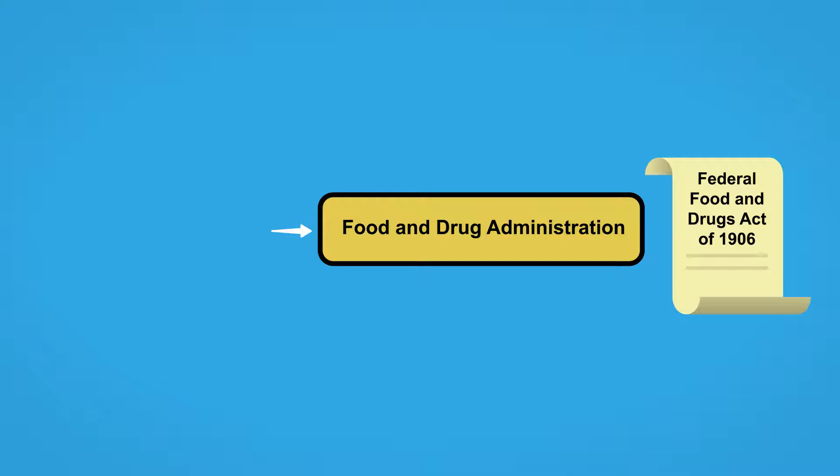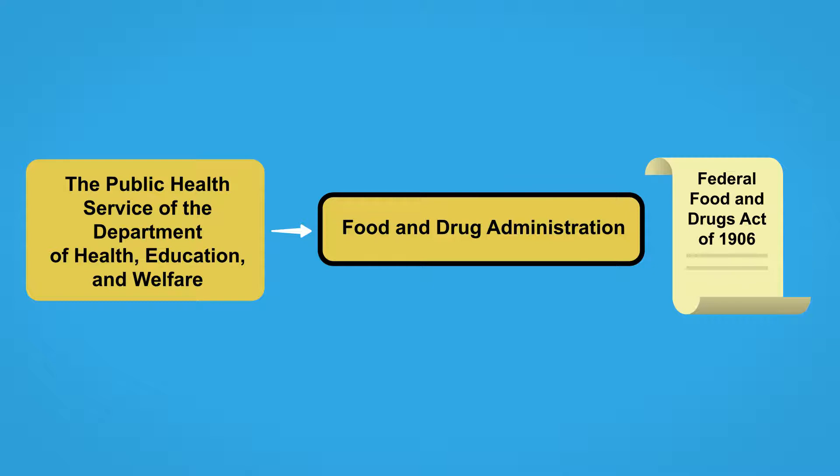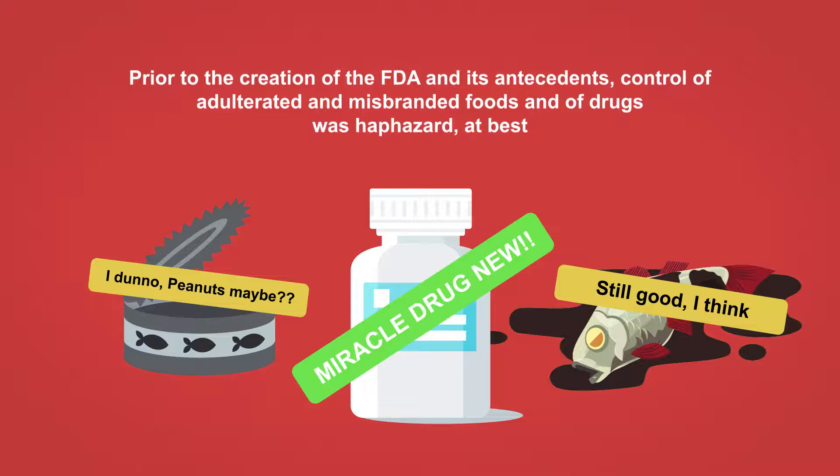In 1940, the FDA was removed from the Department of Agriculture, and after transitions through the Federal Security Agency and the Public Health Service of the Department of Health, Education, and Welfare, today's FDA is a division of the U.S. Department of Health and Human Services.